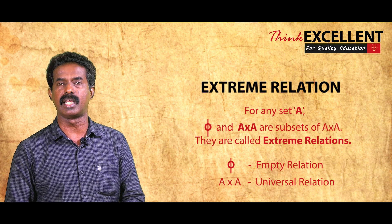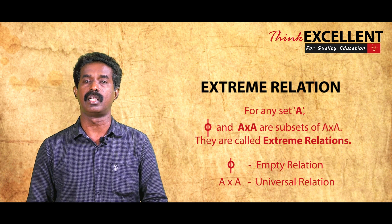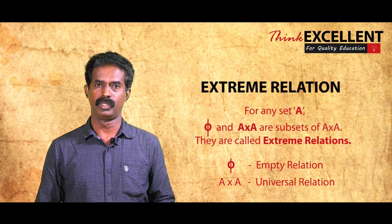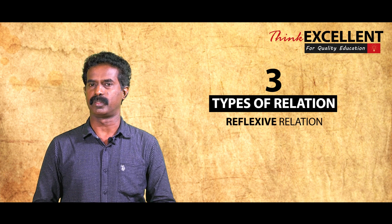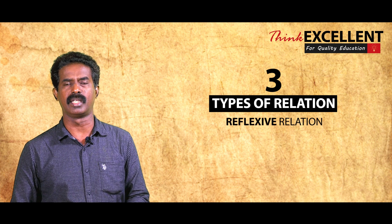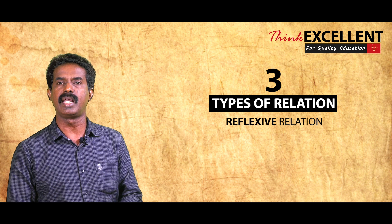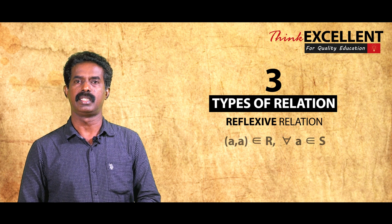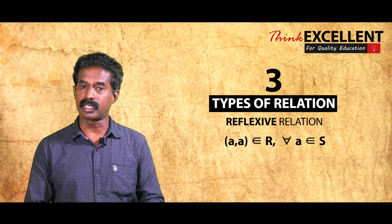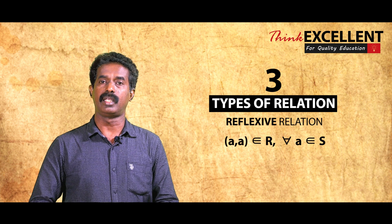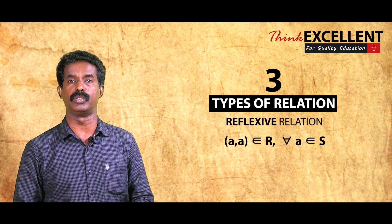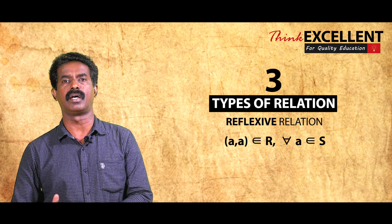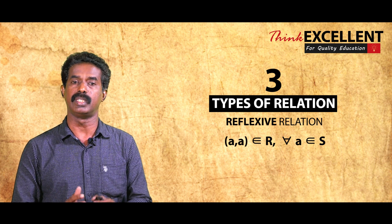Phi is called the empty relation and A cross A is called the universal relation. Now we study three types of relations. The first is reflexive relation: every element is related to itself. If S is a non-empty set and R is a relation, R is called reflexive if every element of S is related to itself.